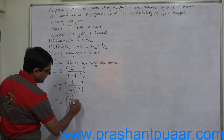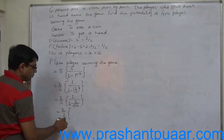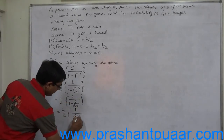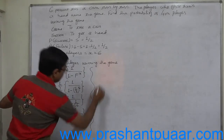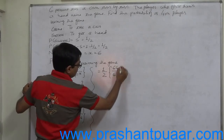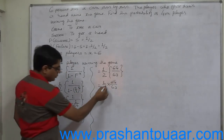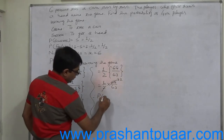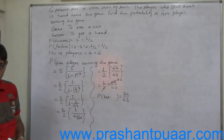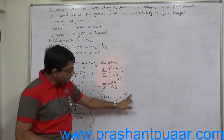That means 1/2 into 1 upon (1 minus (1/2) raised to 6). Now (1/2) raised to 6 means 1/64, so we get 1/2 into 1 upon (1 minus 1/64), which is 1/2 into 1 upon (63/64), that means 1/2 into 64/63. After cancellation of 2 and 64 by 32, the probability of the first player winning the game comes to 32/63.